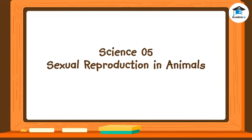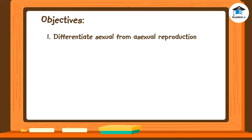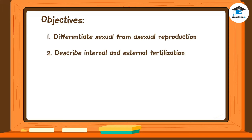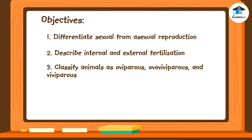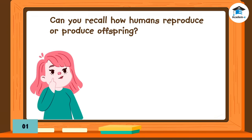Science 5: Sexual Reproduction in Animals. At the end of the lesson, you should be able to differentiate sexual from asexual reproduction, describe internal and external fertilization, and classify animals as oviparous, ovoviviparous, and viviparous.